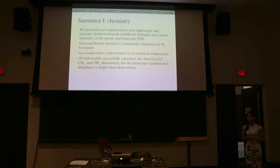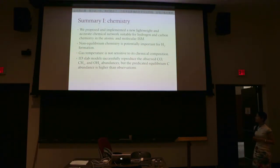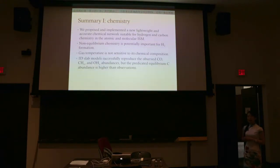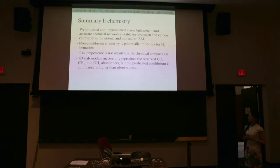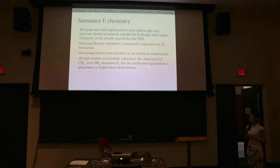Summary for part one: we proposed and implemented a new lightweight and accurate chemical network for hydrogen and carbon chemistry in the ISM. By timescale arguments, non-equilibrium chemistry is potentially very important for H2 formation. Gas temperature is not sensitive to chemical composition of the ISM. Using our lab models, we can successfully reproduce the observed CO, CH, and OH abundances, but the predicted equilibrium C I abundance is still too high.